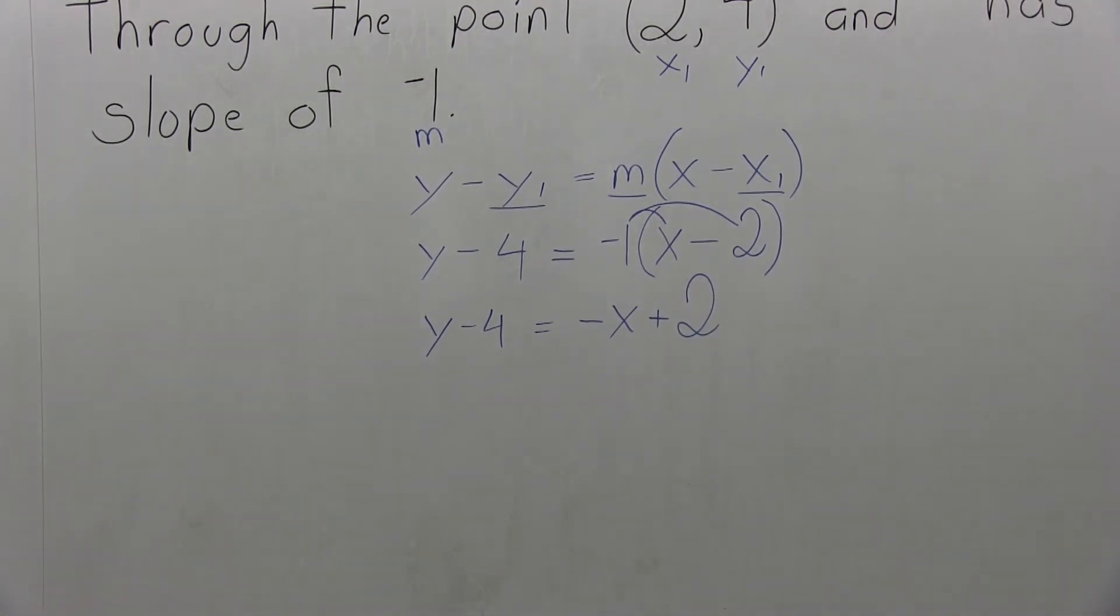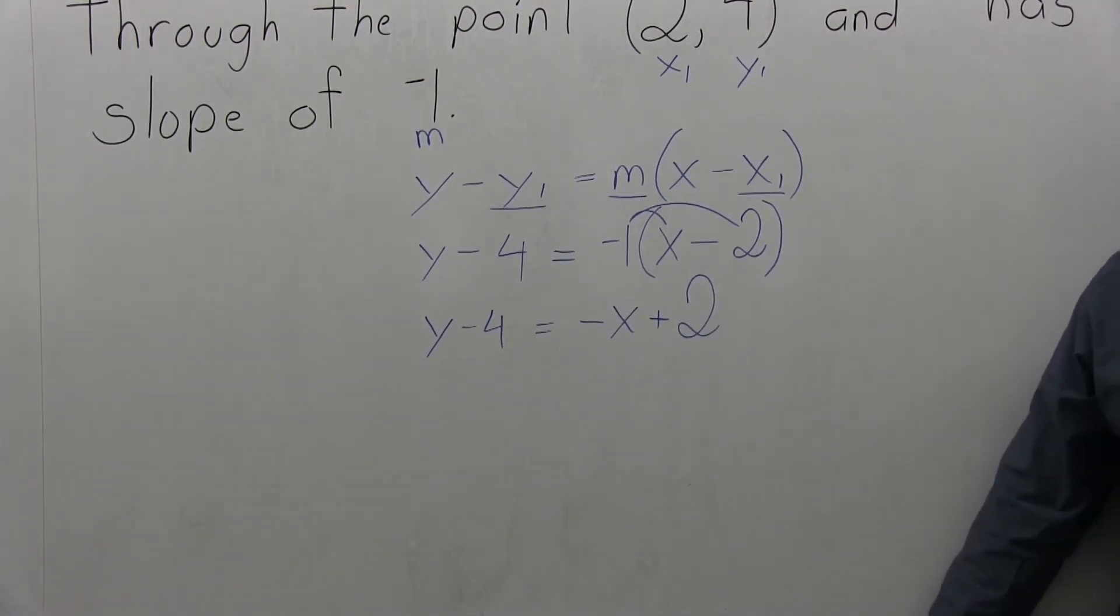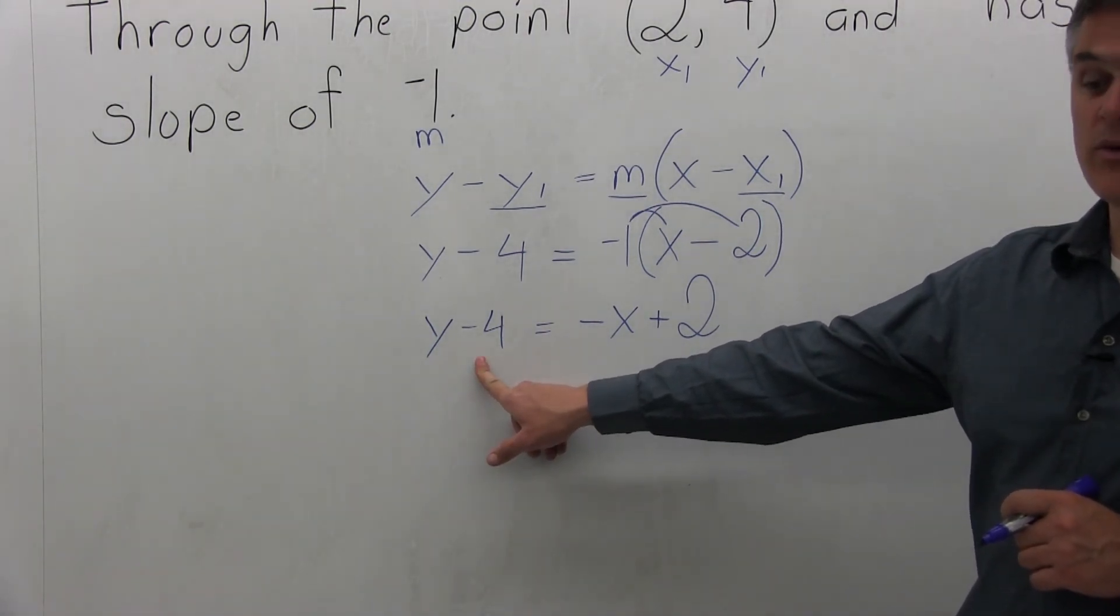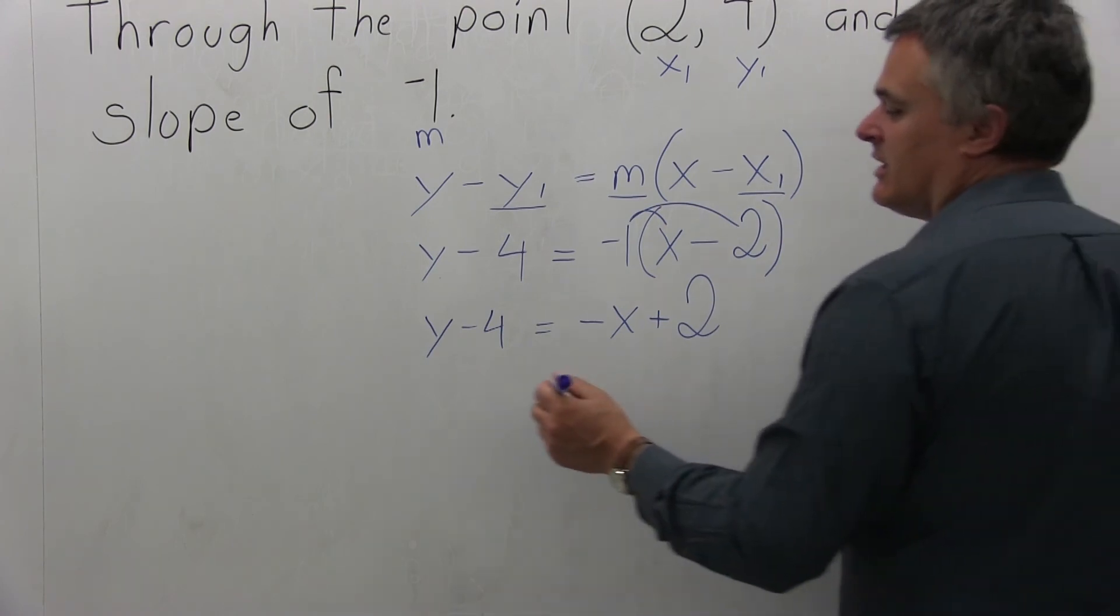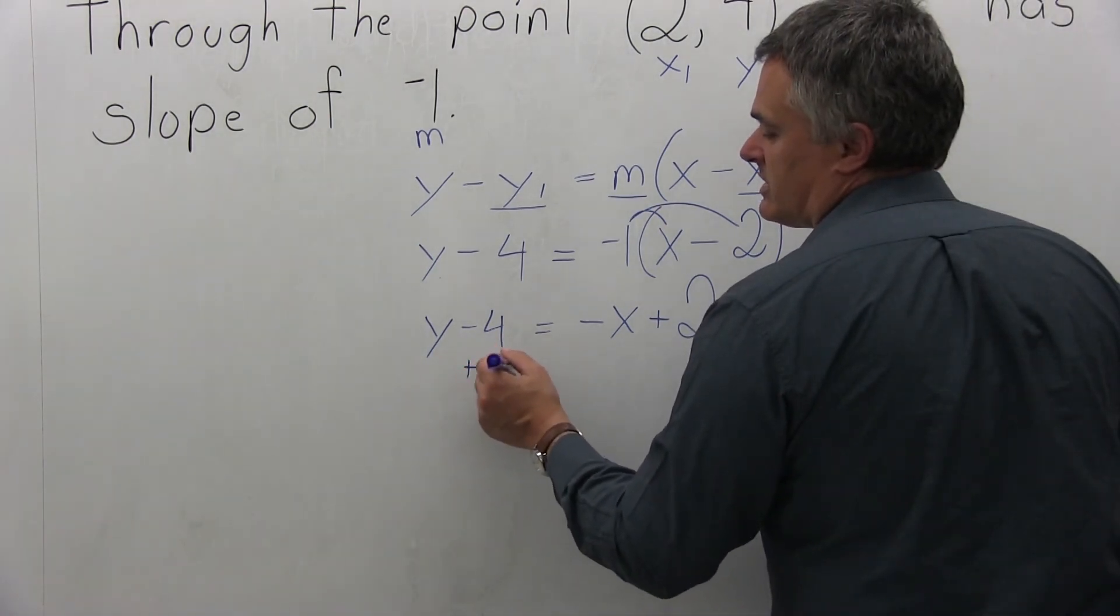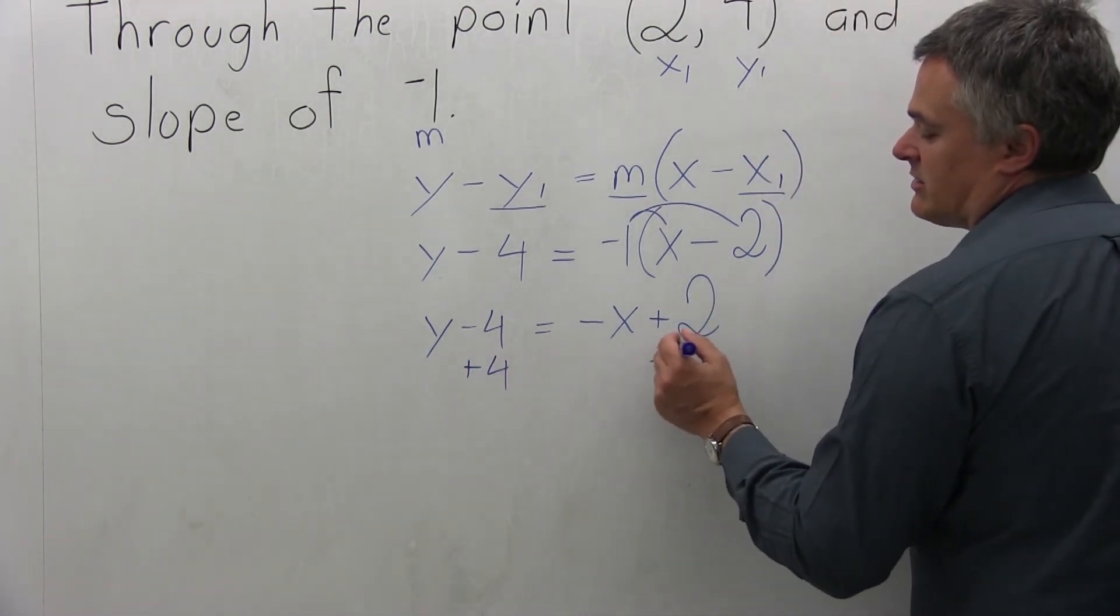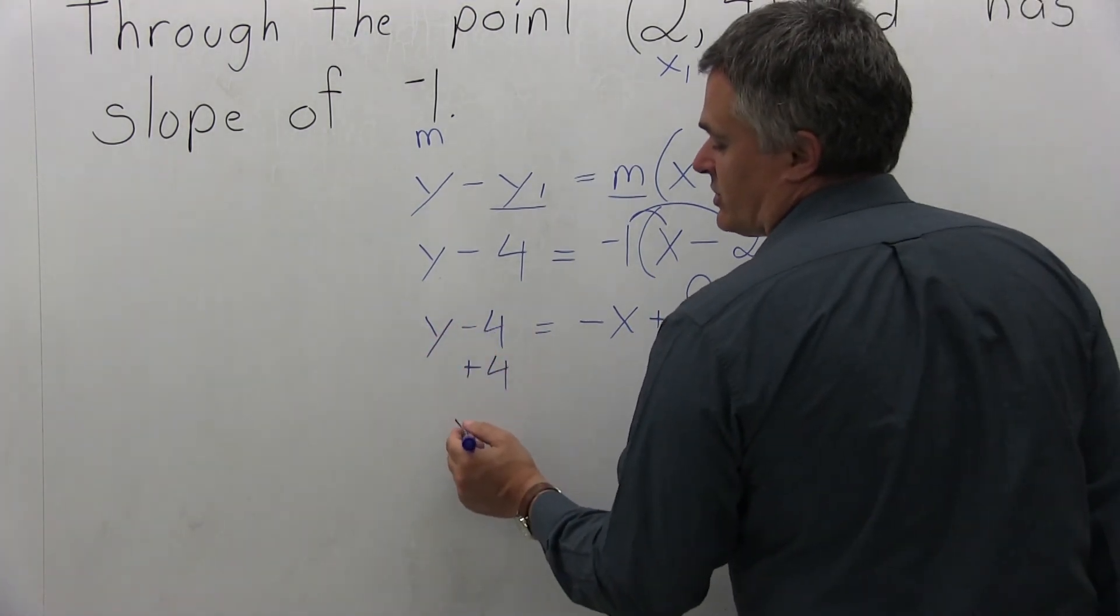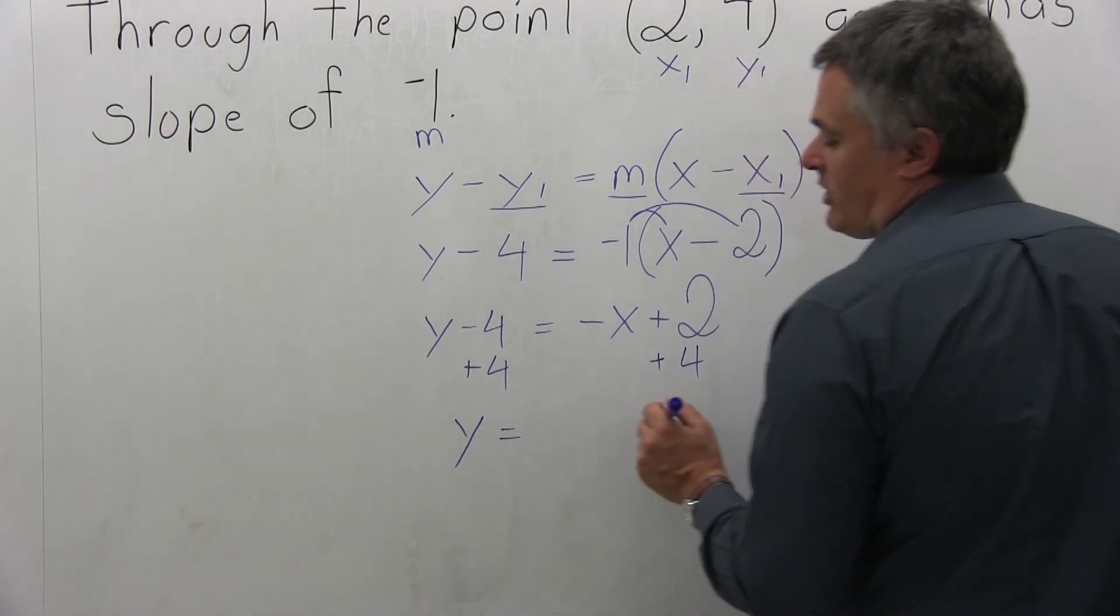So now to finish it off, I want to have y by itself on the left side of the equation. And right now I don't have y by itself. I have y minus 4. I want to get rid of the minus 4 on the left. So what I can do is on both sides of the equation write in a plus 4. And on the left it will cancel, leaving me with just y.